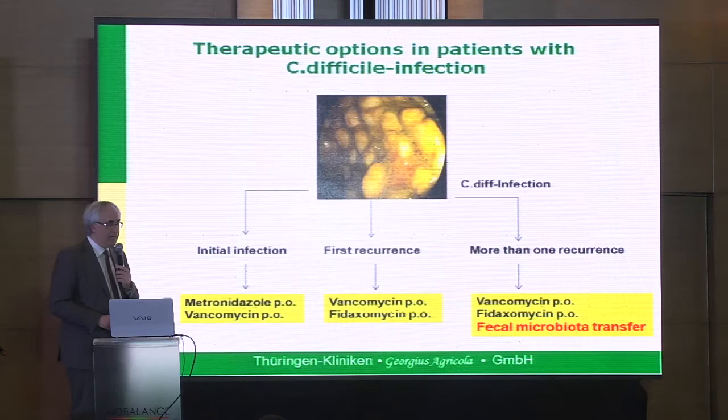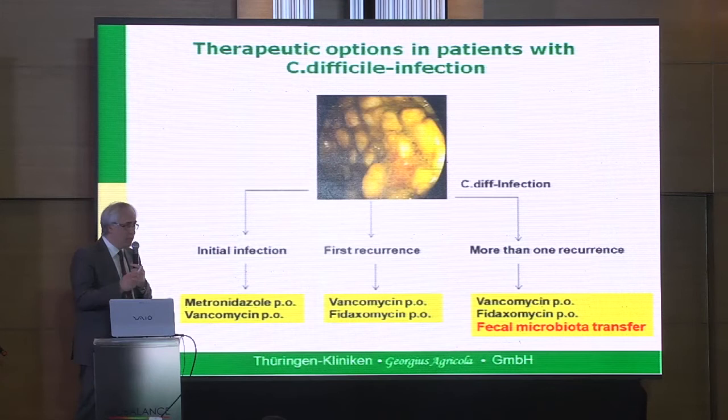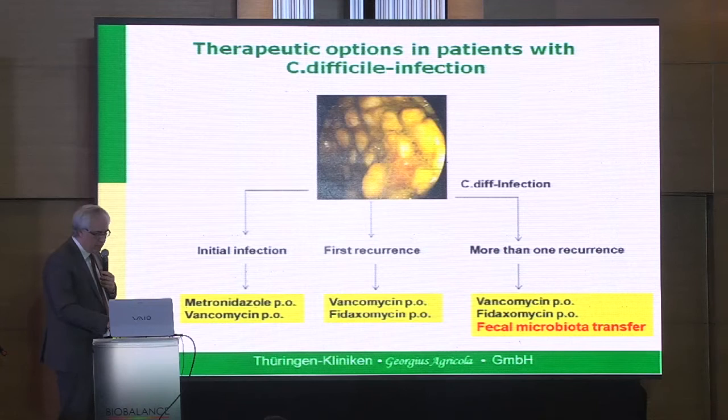What can we do in the clinic with patients with Clostridium difficile? For the initial infection, we try to treat with antibiotics — metronidazole, vancomycin, sometimes a combination of both. After the first recurrence, we have one more antibiotic, but it is very expensive — the cost of five days' therapy is almost 2,000 euros in Germany. It's fidaxomycin. And we have something new called fecal microbiota transfer.